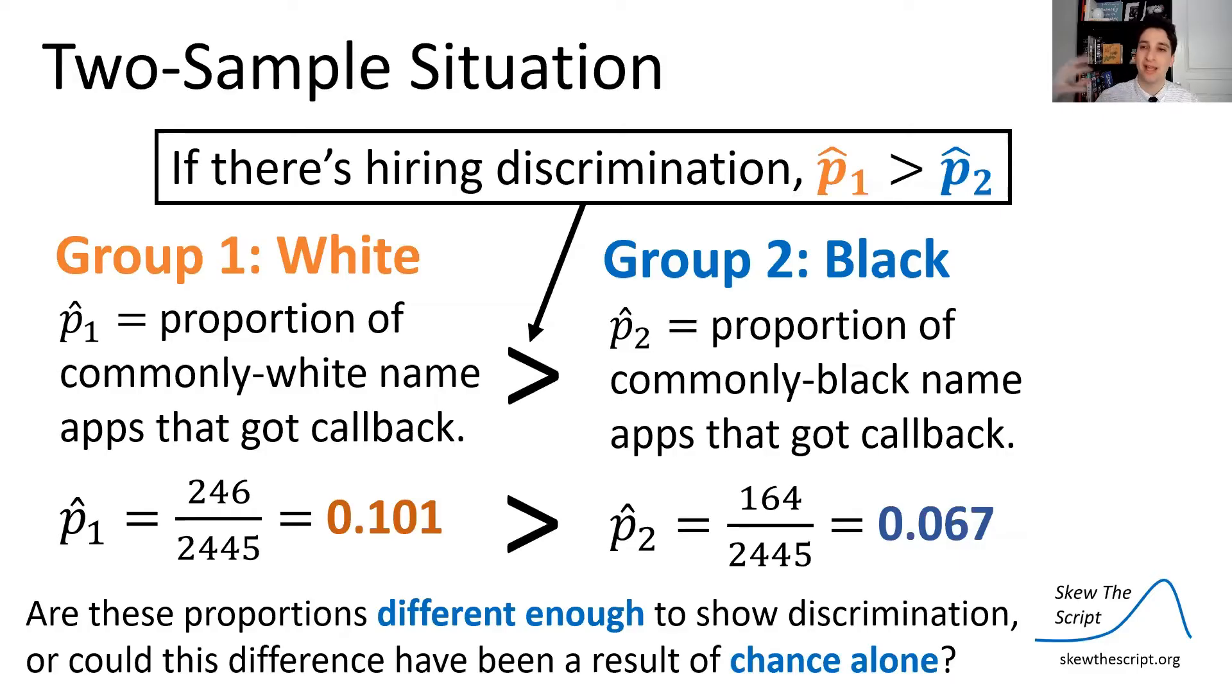Or could this difference have been the result of chance alone in the random assignment process? So for example, say that by chance alone, the white name resumes got sent to employers that have a higher hiring rate by chance. Can we rule that out statistically?